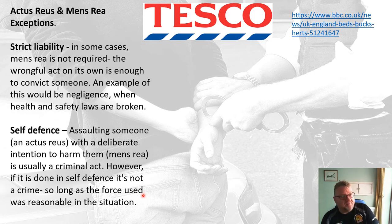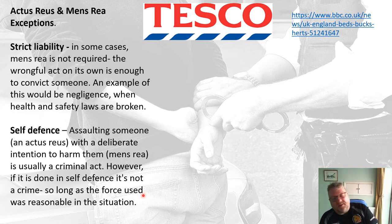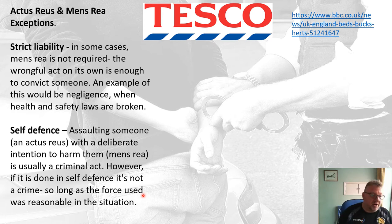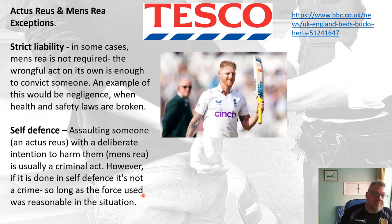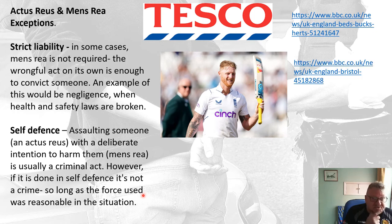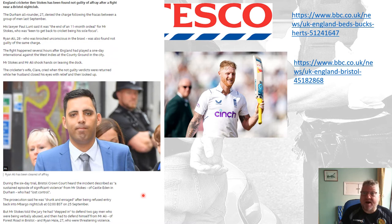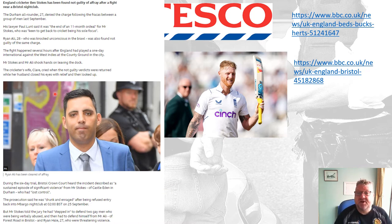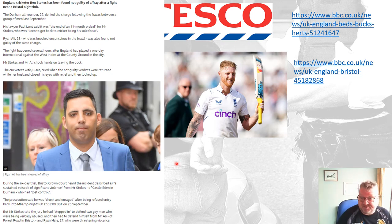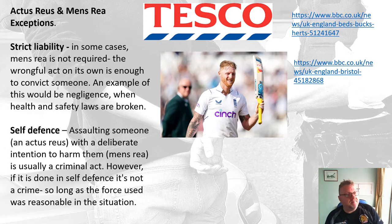Another exception is self-defence. Assaulting someone — hitting someone — is an actus reus. Deliberately intending to harm them would be a mens rea, which is usually a criminal act. However, if it's done in self-defence, it's not always a crime, so long as you use reasonable force. The example you can use is England cricket captain Ben Stokes, who was charged with affray in Bristol but was found not guilty because he was stepping in to defend someone who was being homophobically abused. So those are the exceptions to actus reus and mens rea.